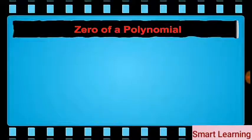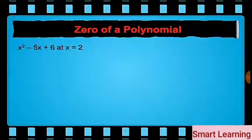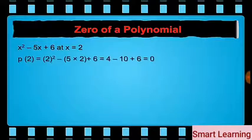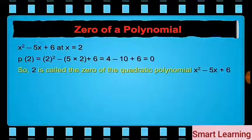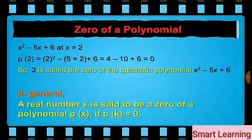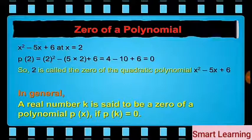Let us now discuss the zero of a polynomial. In the quadratic polynomial x squared minus 5x plus 6, at x equal to 2, the value of the polynomial p of 2 is equal to 0. So 2 is called the zero of the quadratic polynomial x squared minus 5x plus 6. In general, a real number k is said to be a zero of a polynomial p of x if p of k is equal to 0.